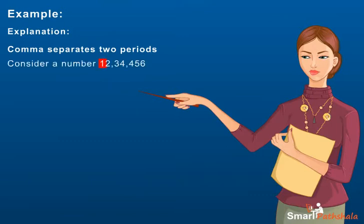Consider a number 12,34,456. Here, 456 belongs to the ones period, 34 belongs to the thousands period and 12 belongs to the lakhs period. To separate the periods, a comma is placed.